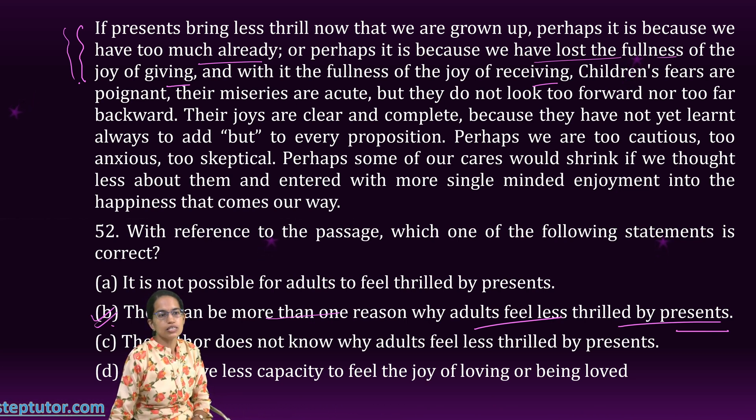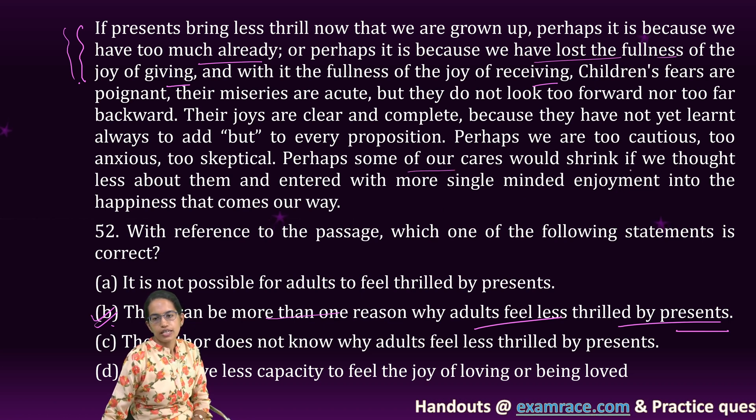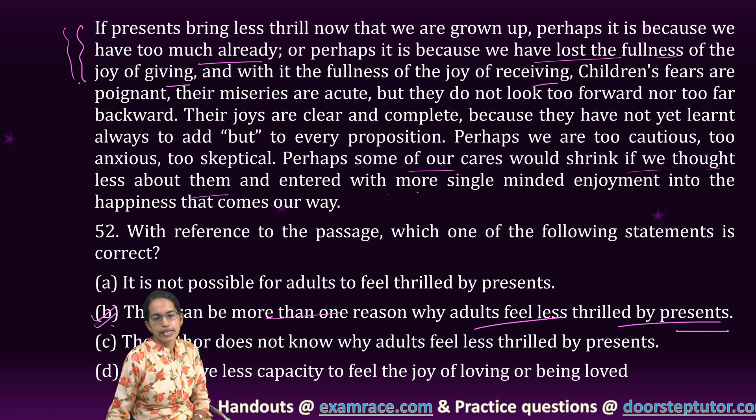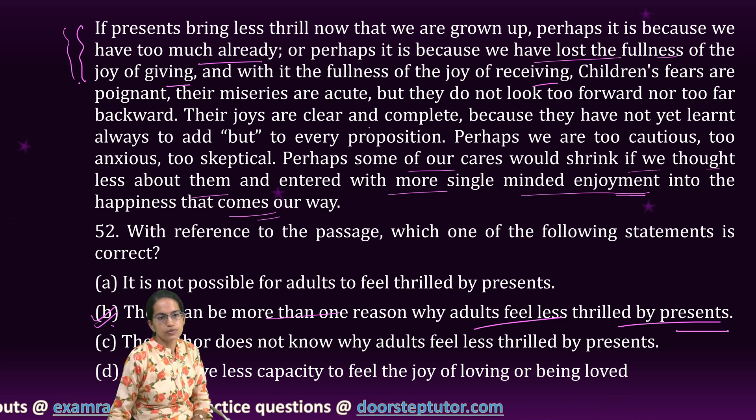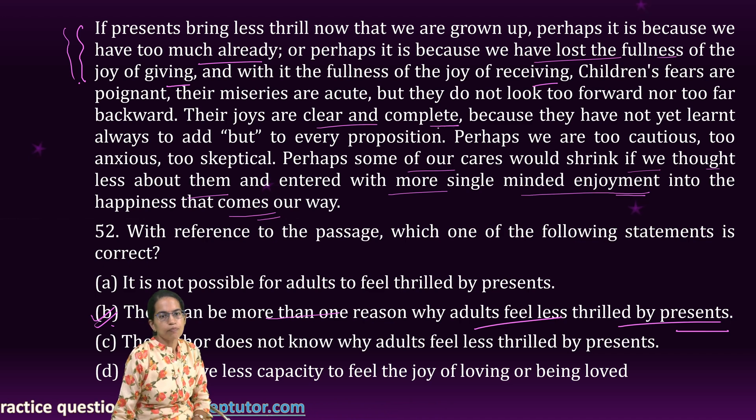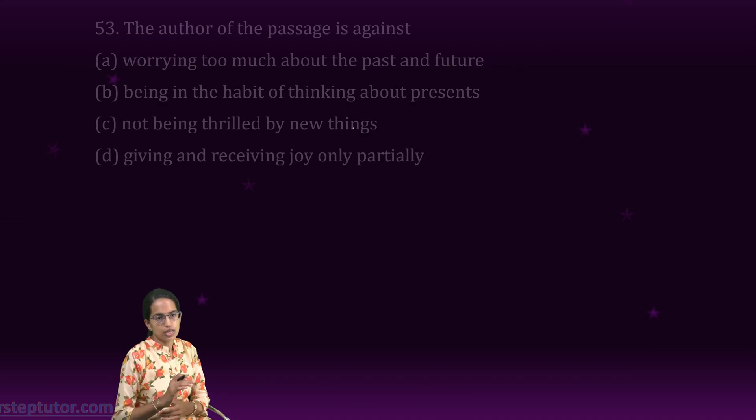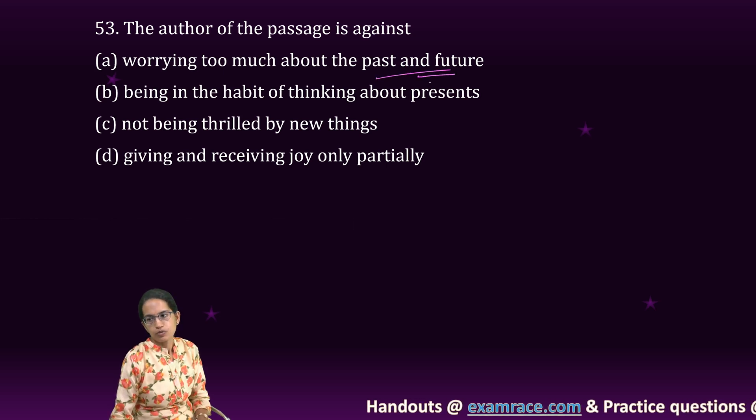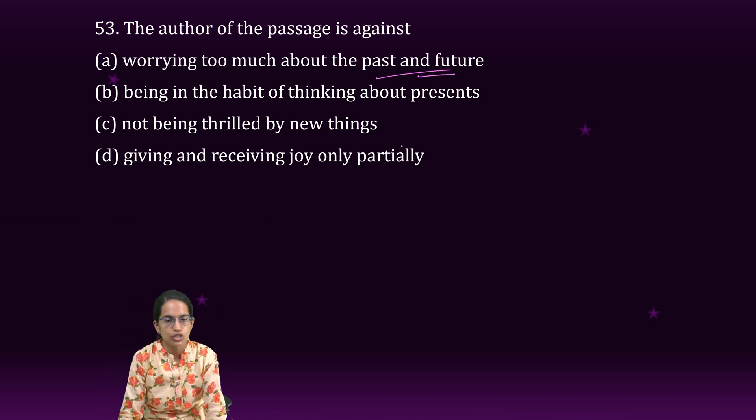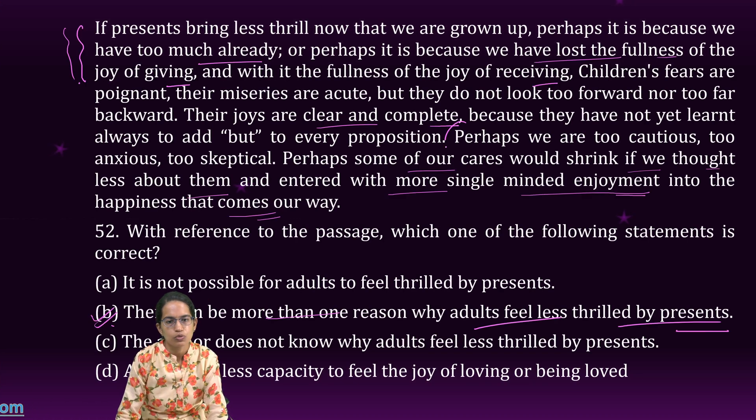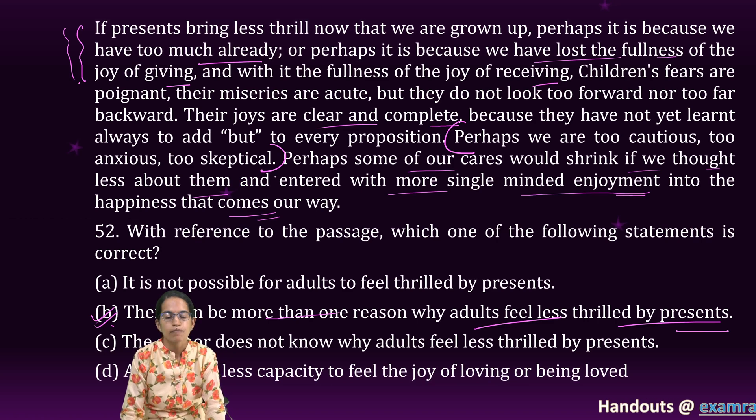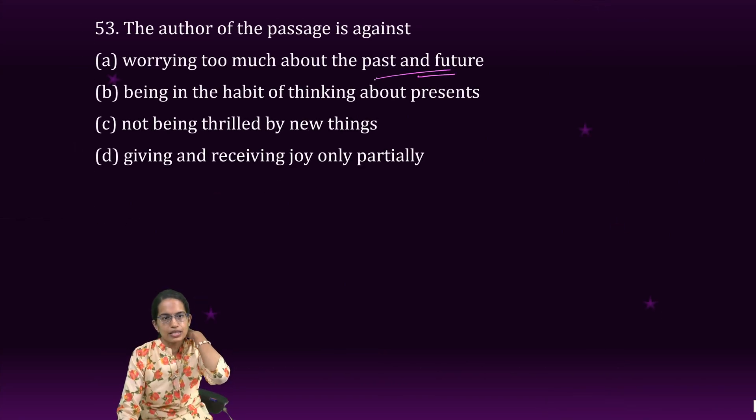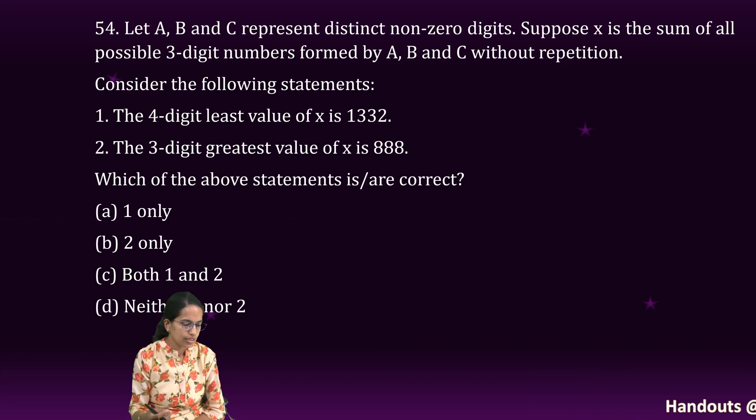Then it says that children fears are poignant and their miseries are acute. Now it also says that perhaps some of our cares would shrink if we thought less about them and entered with a more single-minded enjoyment into the happiness that comes. Our joys were clear and complete. So what it says, what is trying to say based on the question that the passage is against worrying too much about the past and the future. So it says perhaps we were too much cautious, too much anxious. If we go back, it says perhaps we were too much cautious, too much skeptical, too much anxious. So it clearly says that that is something that was the reason why we are not enjoying the same thing as the gifts have been.